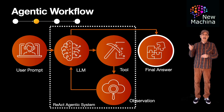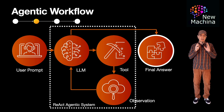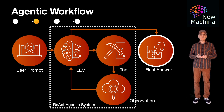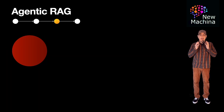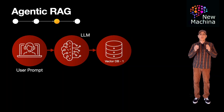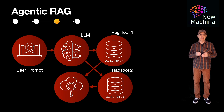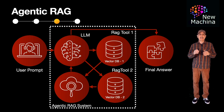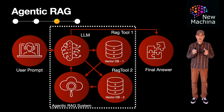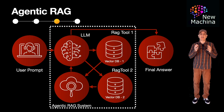I recently created a video comparing and contrasting both RAG versus ReAct design patterns — feel free to check that out if you're interested. An astute viewer shared the idea of use cases that could be implemented more effectively by marrying RAG and the ReAct agentic pattern. And as it turns out, this marriage of RAG and agentic workflows is another emerging design pattern available for AI system builders.